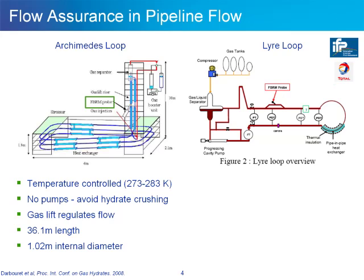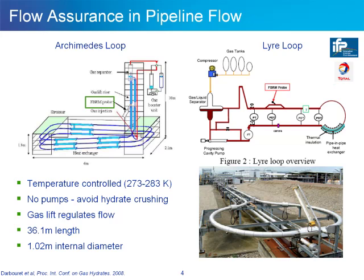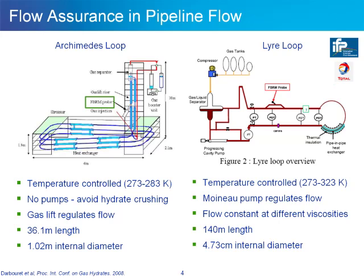The second experimental setup involved the use of a lyre loop, a picture of which is shown here. The lyre loop was similarly temperature controlled from 273 to 323 Kelvin. The flow was held constant despite changes in solution viscosity; a Monnier pump was used to regulate this flow. This was a much larger system with an overall length of 140 meters and an internal diameter of nearly 5 centimeters.